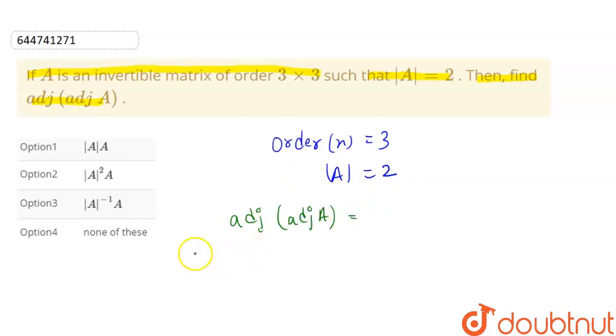For a non-singular matrix of order N, adjoint into adjoint of A will be equal to determinant of A to the power N minus 2 into A.